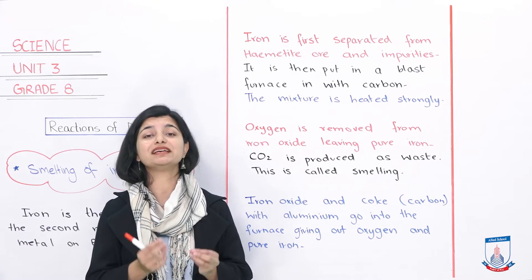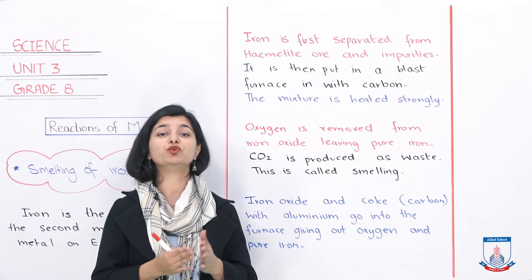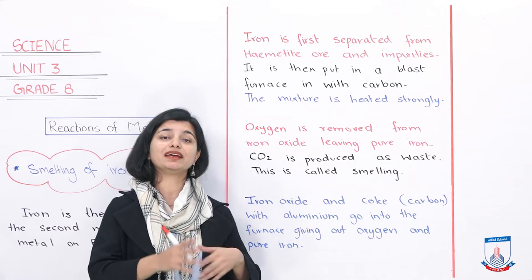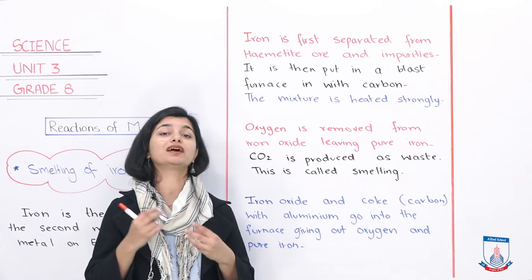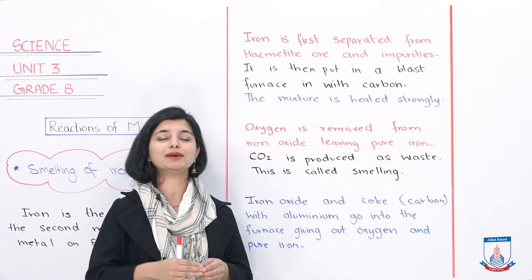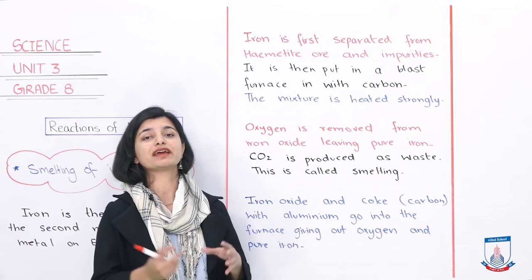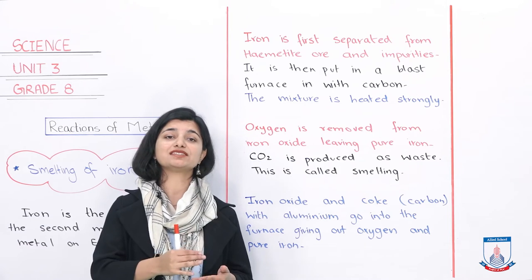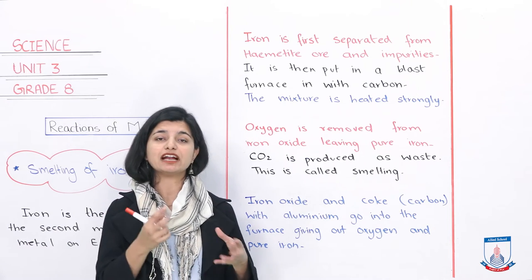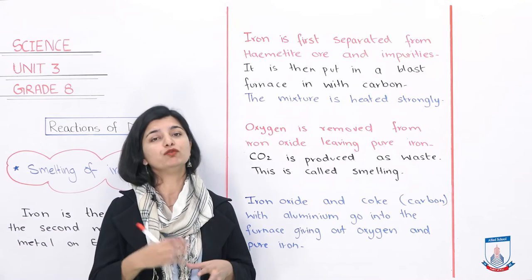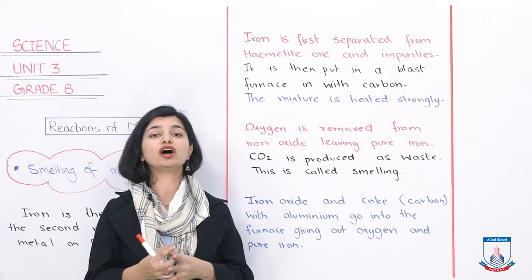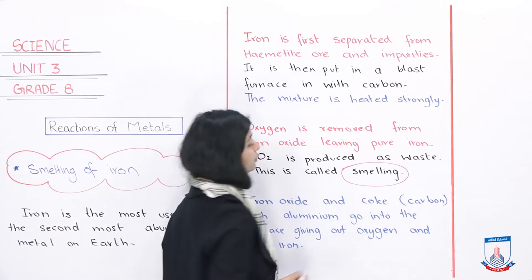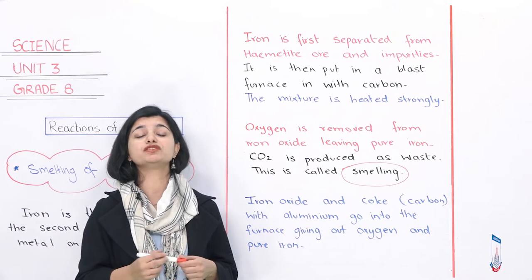Smelting is a very basic, simple process. Oxygen is removed from iron oxide and combines with carbon to form carbon dioxide. Because carbon reacts with oxygen, the oxygen is taken from the iron oxide. The iron comes out in molten form, the waste gases are removed from the furnace, and pure iron is collected from the bottom. So, iron oxide and coke (carbon) go into the furnace, and the outputs are carbon dioxide waste gas and pure iron.